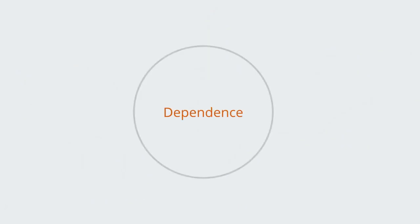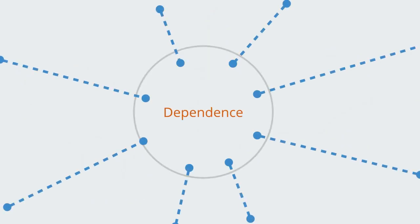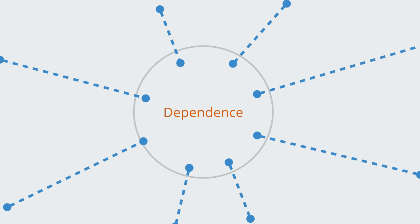Dependence may then be understood as the opposite of autonomy and thus a lack of self-contained integration. Without appropriate connections between the parts, the system requires more connections to other entities within its environment to enable its functional processes to take place.